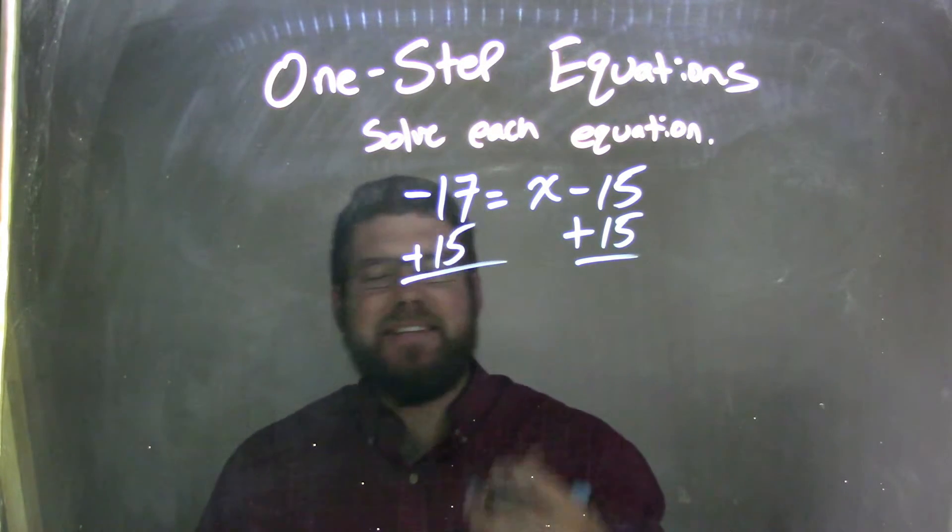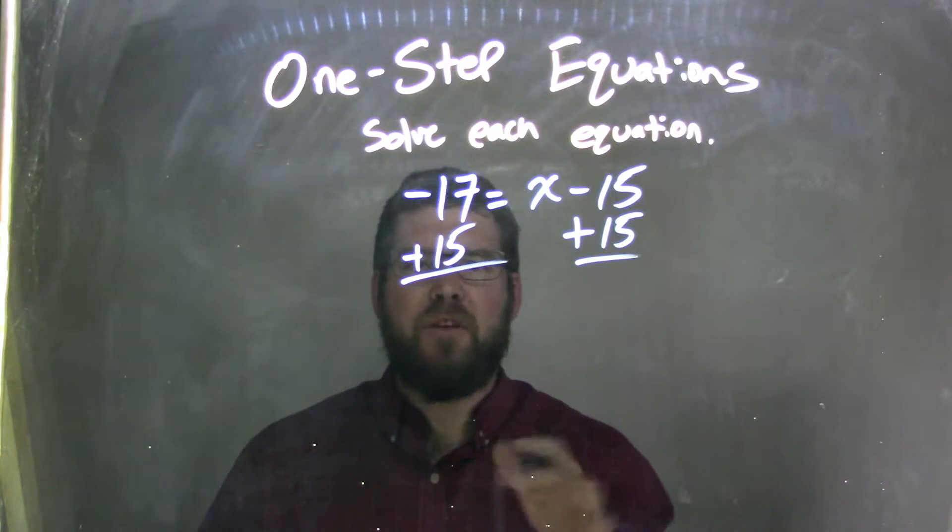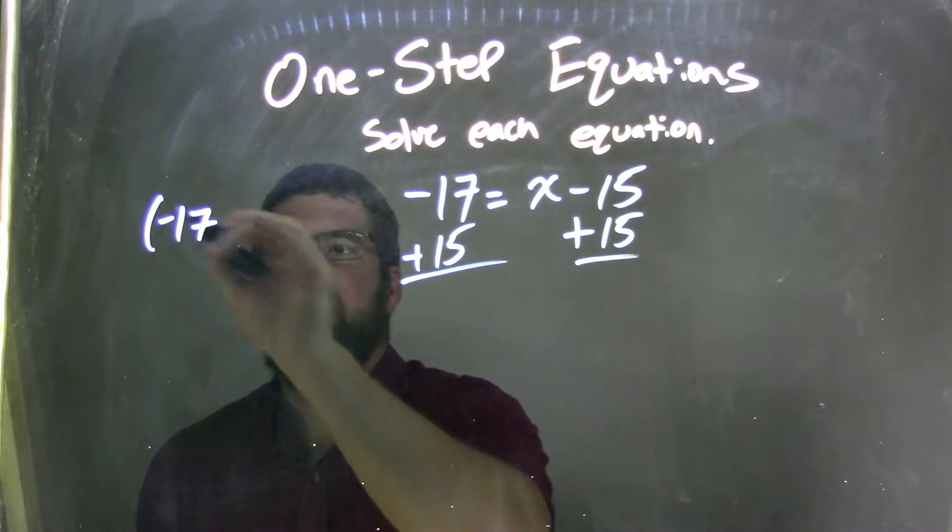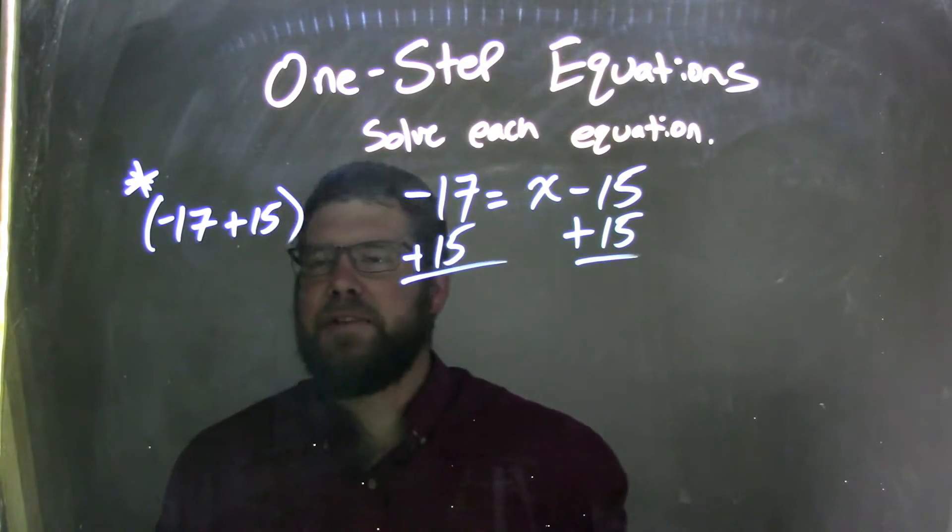Well right now I can say it's going to be negative 2, but some of you might be struggling with that, so let me show you something that might help you out here. If I have negative 17, a little note here, a little trick I like to do, plus 15...